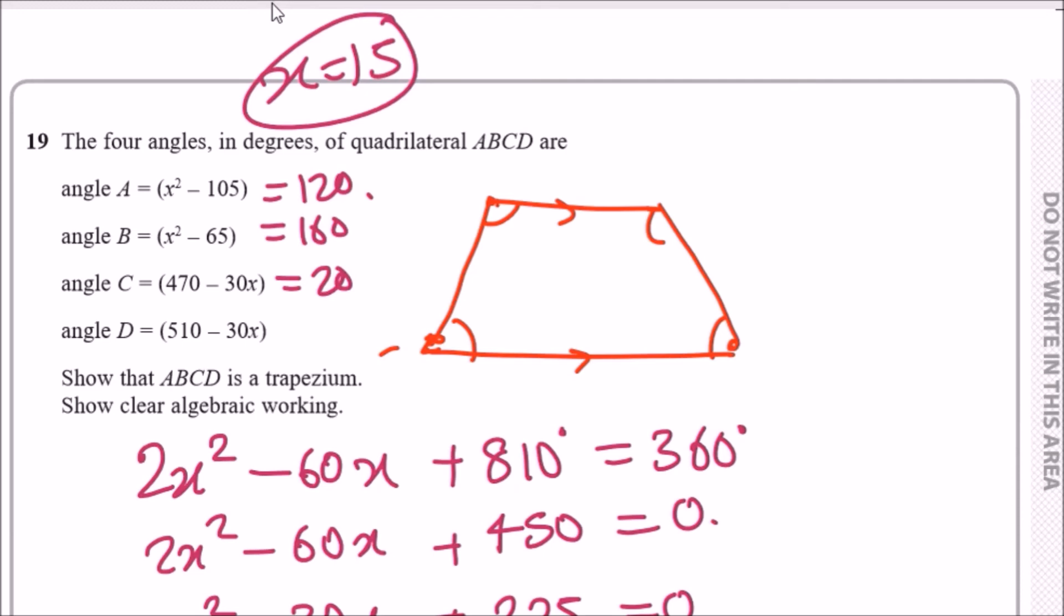Finally, angle D is 510 minus 30 times 15, and that should be 60 degrees. So now we can see that the two pairs that make 180 would be 120 and 60, so let's call this one A and D.